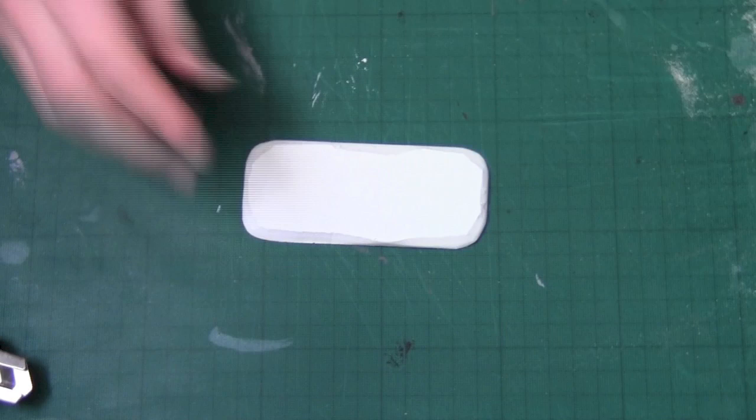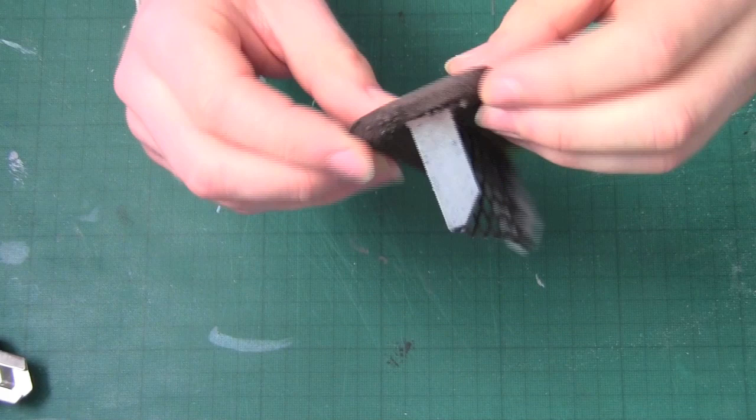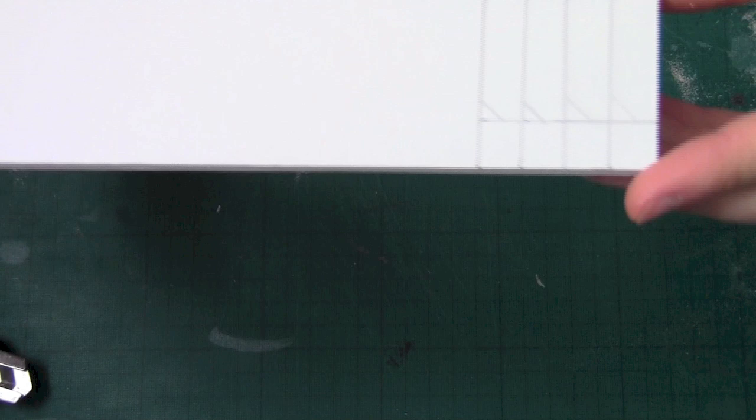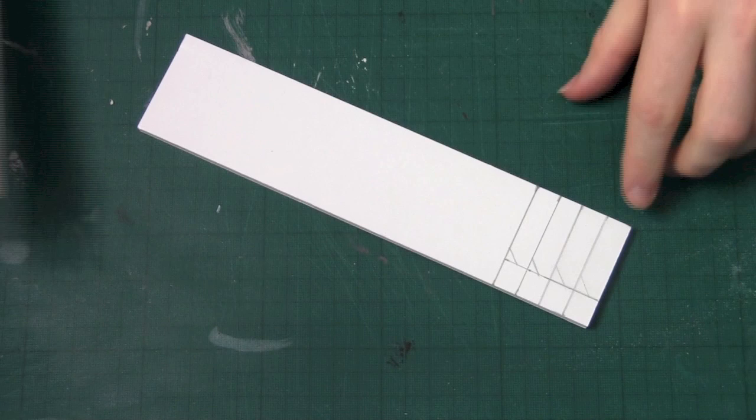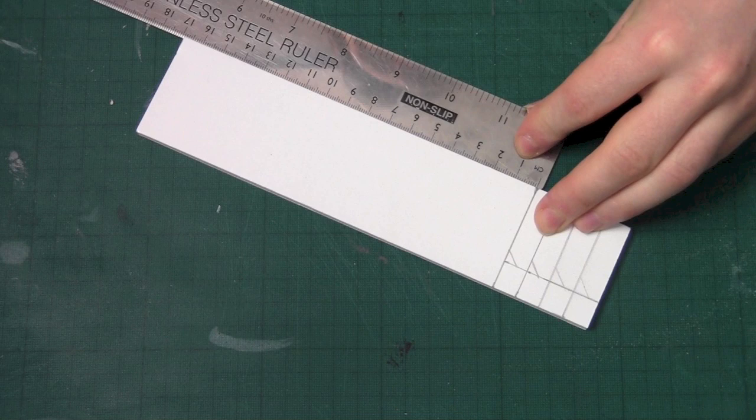With the base out of the way it is time to work on the fence posts. To do this we are going to use the 5mm piece of foam board and cut small pieces as shown in the video. The measurements of each fence post is 1cm in width and 3.5cm in height.